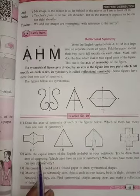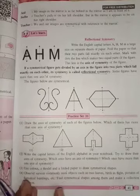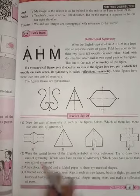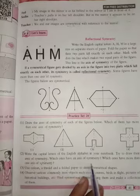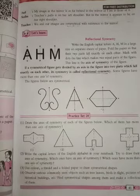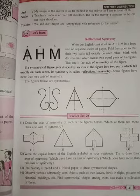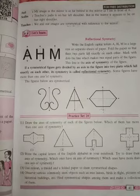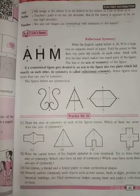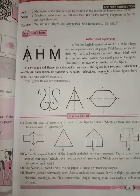The next question is: write the capital letters of the English alphabet in your notebook and try to draw the axis of symmetry. Which ones have an axis of symmetry and which ones have more than one axis of symmetry? So what I want you to do is draw A to Z and you can see which alphabet has axis of symmetry and which is not.